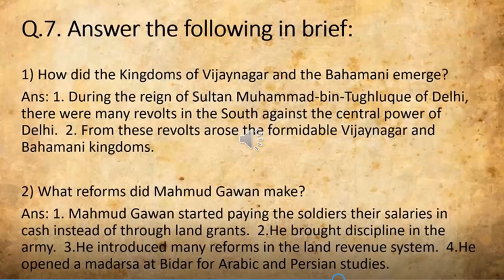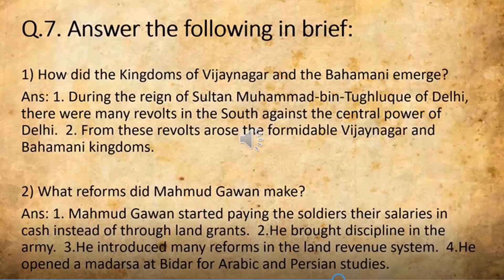This answer is also on the screen. Mahmud Gawan started paying soldiers salaries in cash instead of land grants. He brought discipline in the army. He introduced many reforms in the land revenue system. From this, two questions can be asked. The first one: Who introduced many reforms in the land revenue system? The options will be given: Mahmud bin Tughluq, or Mahmud Gawan, or Aurangzeb.